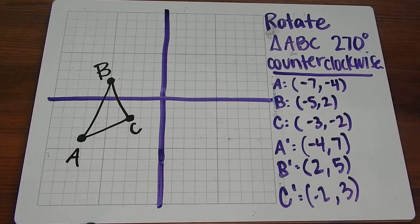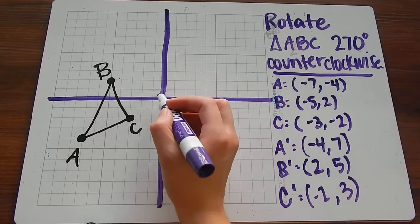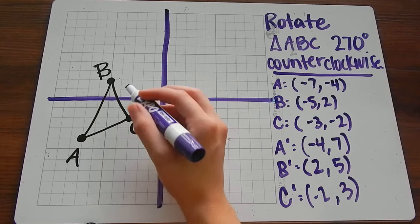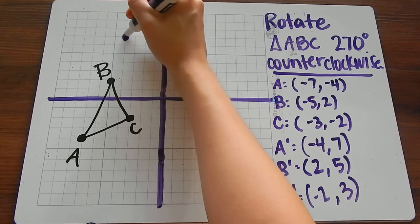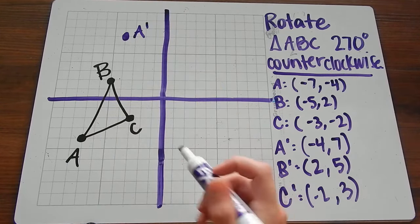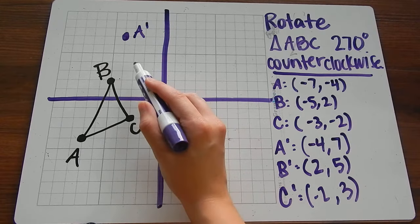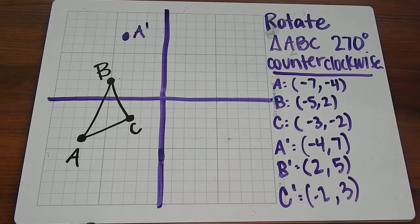So A prime is (-4, 7). So over here we have (-4, 7). That's our new A prime. Remember, I wanted it to be in that quadrant, so that should be an indication that this is correct.